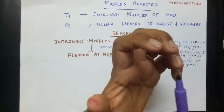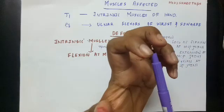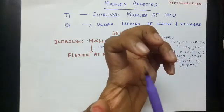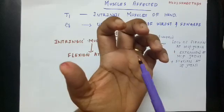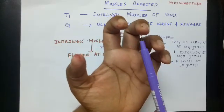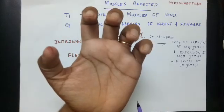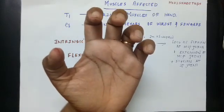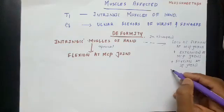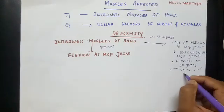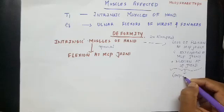Because of the intact long flexors of the fingers, there will be flexion at the interphalangeal joints. Extension at the metacarpophalangeal joint along with flexion at the interphalangeal joint causes a deformity which is known as complete claw hand deformity.